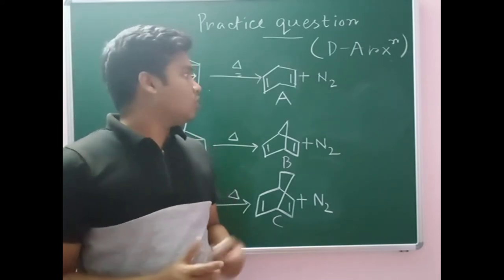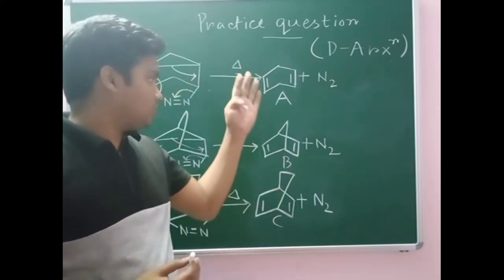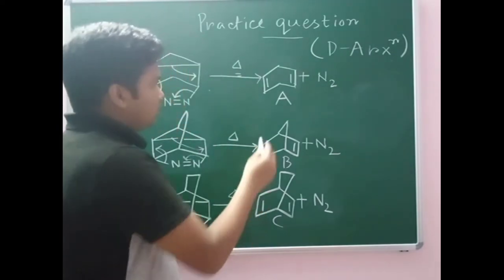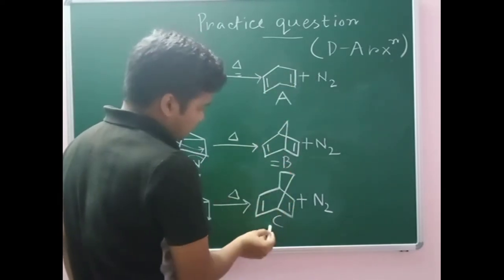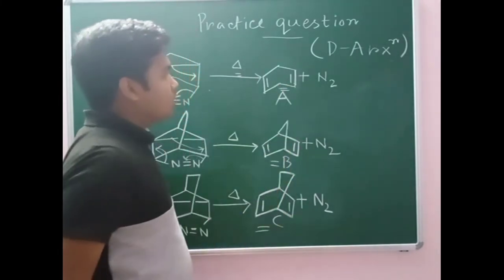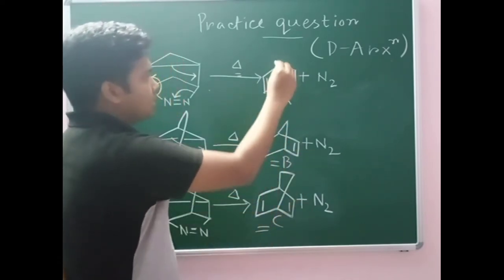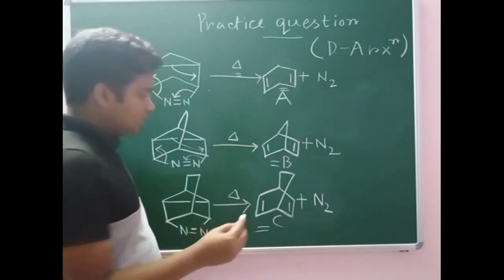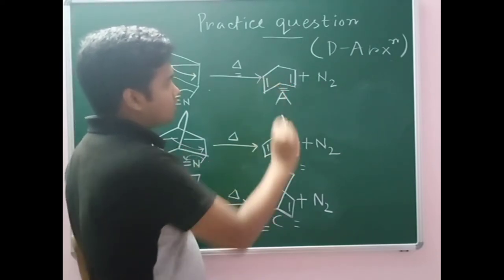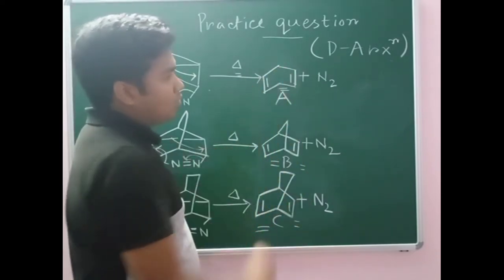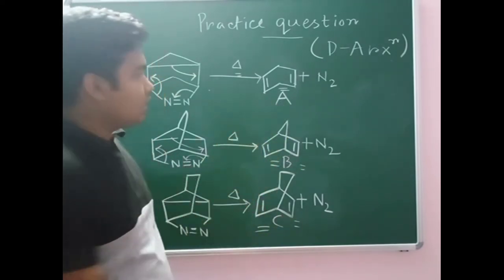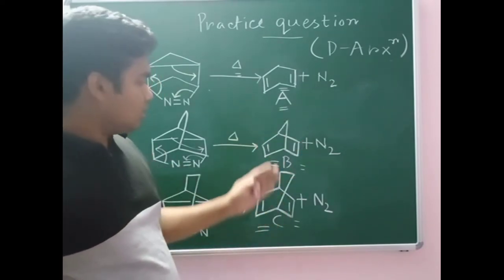Now to determine the decreasing order of the rate of formation of these three products, you have to consider the stability. You can see that products B and C are bridged bicyclic compounds, but product A is not a bridged bicyclic compound — there is no bridging methylene group. So remember that bridged bicyclic compounds will be less stable compared to non-bridged compounds, meaning product A will be the most stable among these three.